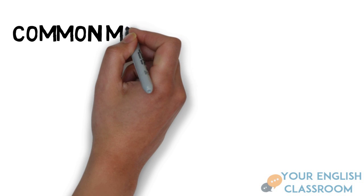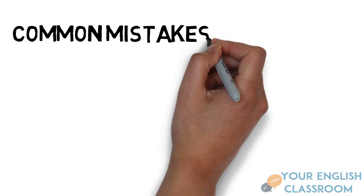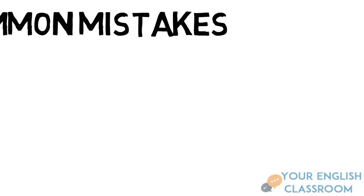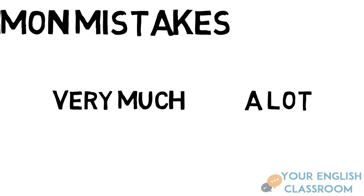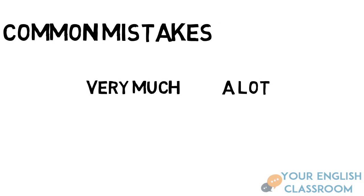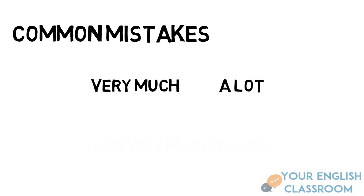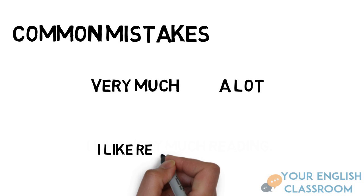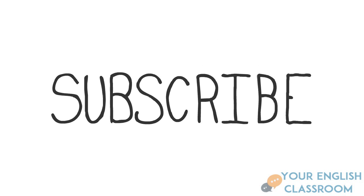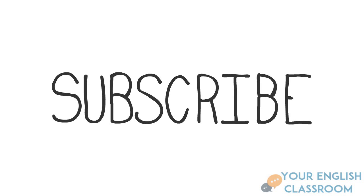Now there are some common mistakes you need to pay attention to. When using 'very much' and 'a lot' in these sentences, make sure they come after, not before, the verb 'like.' For example, you'd say 'I like reading very much' — it comes at the end. Hope that was a good lesson. Don't forget to hit the like button. Peace, thanks.